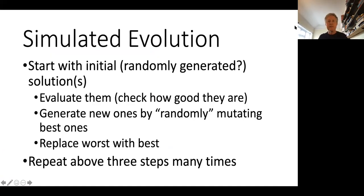I'll be talking about simulated evolution, and it's really so simple. You start with initially randomly generated solutions - put randomly generated in question mark, because sometimes we don't do them uniform random. Then you evaluate them, check how good they are. Then generate new ones by randomly mutating the best ones found so far. Each time around the loop, replace the worst ones with the best ones. Repeat these three steps many times until we run out of time or have a satisfactory solution.